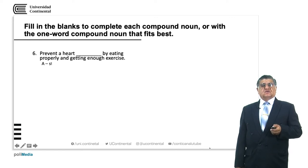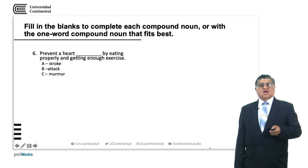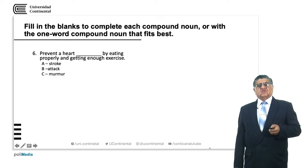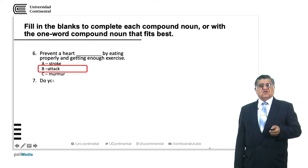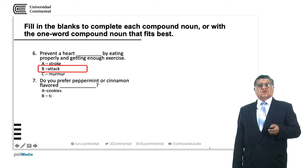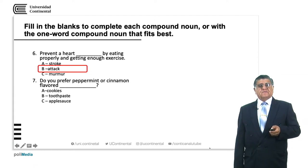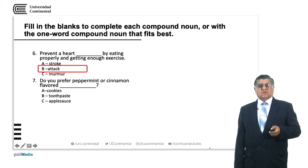Exercise one: 'Prevent a heart _____ by eating properly and getting enough exercise.' Options: heart stroke, heart attack, heart murmur. The answer is heart attack. Heart stroke is also a possible answer. Exercise two: 'Do you prefer peppermint or cinnamon flavored ___?' Options: cookies, toothpaste, applesauce. The answer is toothpaste.